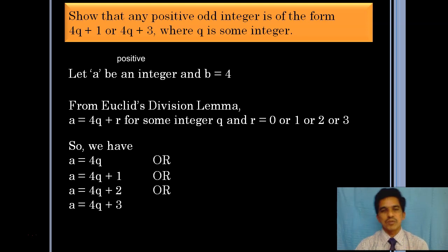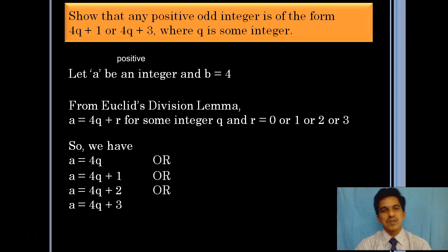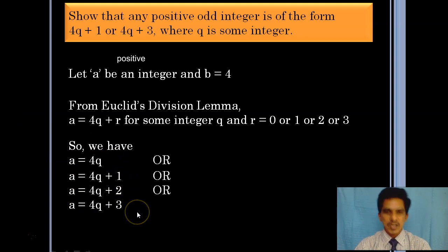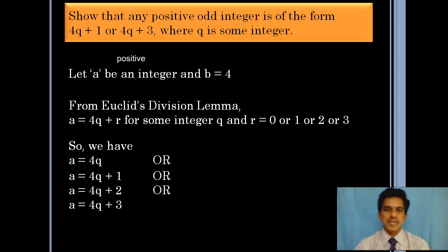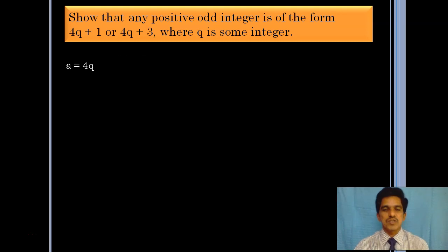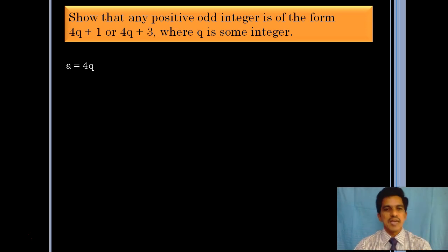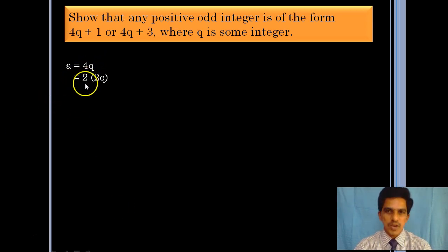Out of these four numbers, two are even and two are odd. Let us take the first case: a is equal to 4q. To check whether this is even, observe that 4q equals 2 times 2q — it is 2 into some value, so it is an even number. Now 4q plus 1: this is 2 times 2q plus 1, which is 2 into something plus 1, so this number is odd.